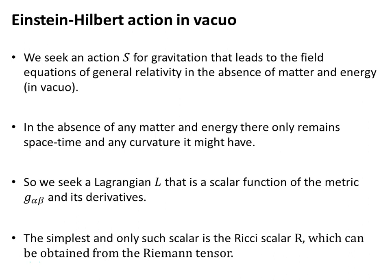In the absence of any matter and energy, there only remains space-time and any curvature it might have. So we seek a Lagrangian L that is a scalar function of the metric g subscript alpha-beta and its derivatives. It turns out the simplest and only such scalar is the Ricci scalar R, which can be obtained from the Riemann tensor through successive contractions.